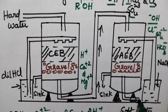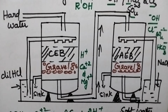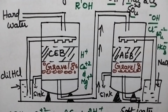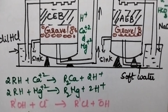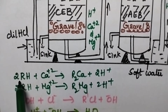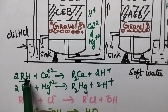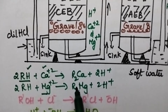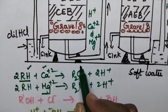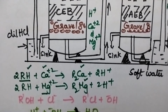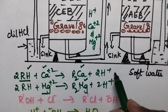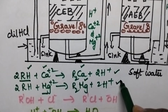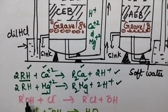Coming to the chemical reactions involved: in the cation exchange bed, the cation exchange resin is represented as RH. The H+ ions are replaced by the calcium and magnesium ions. After some time, the cation exchange bed consists of calcium and magnesium resins, and it also results in the formation of H+ ions.